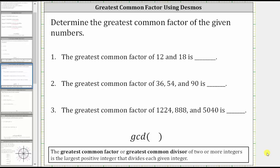This lesson will show how to use Desmos.com to find the greatest common factor or greatest common divisor of given numbers. For examples, we will find the greatest common factor of 12 and 18, the greatest common factor of 36, 54, and 90, and also the greatest common factor of 1,224, 888, and 5040. The greatest common factor or greatest common divisor of two or more integers is the largest positive integer that divides each given integer, and Desmos uses the function GCD for greatest common divisor or greatest common factor.